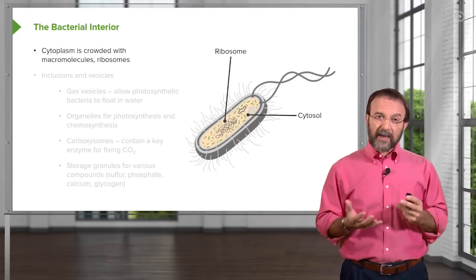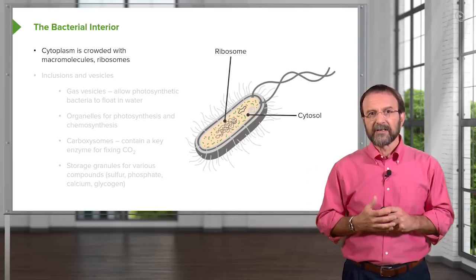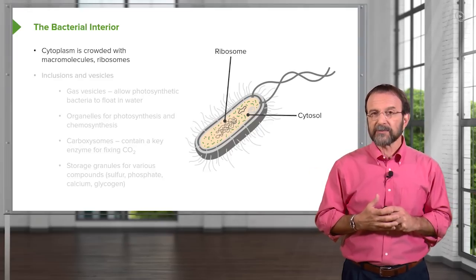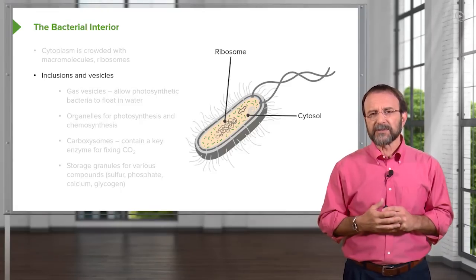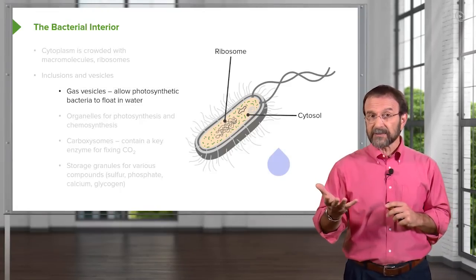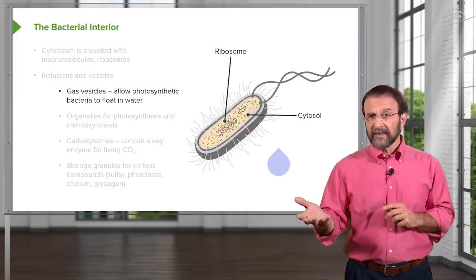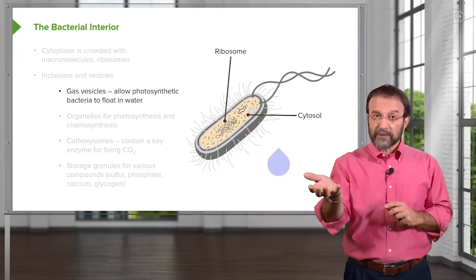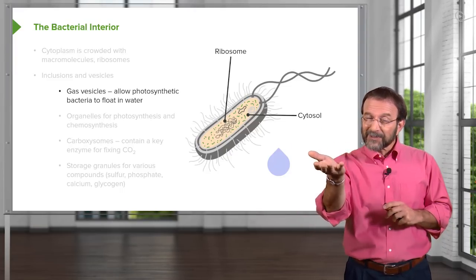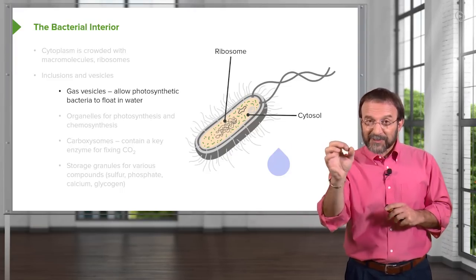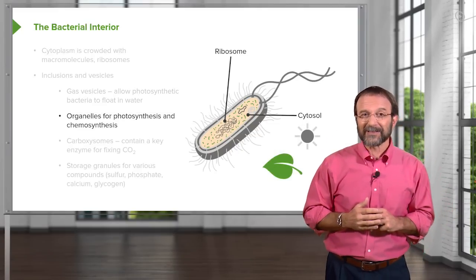The interior of the bacterium is very crowded. There are lots of molecules, including ribosomes where proteins are being made, and all kinds of inclusions and vesicles. For example, there are gas vesicles for bacteria that live in water and photosynthesize — they need to be near the surface, so they have vesicles containing gas that allow them to float. It's quite interesting.